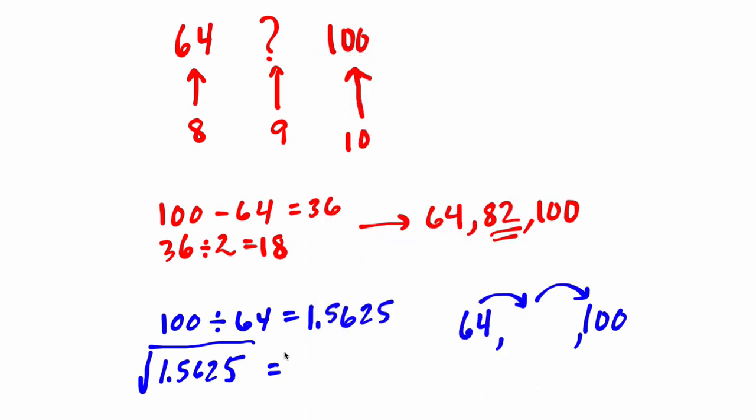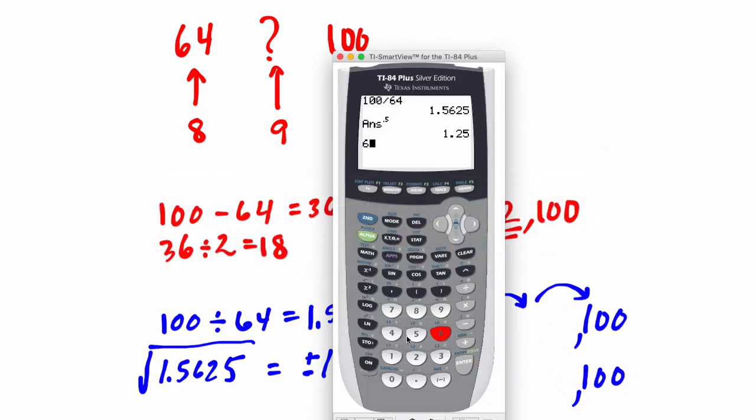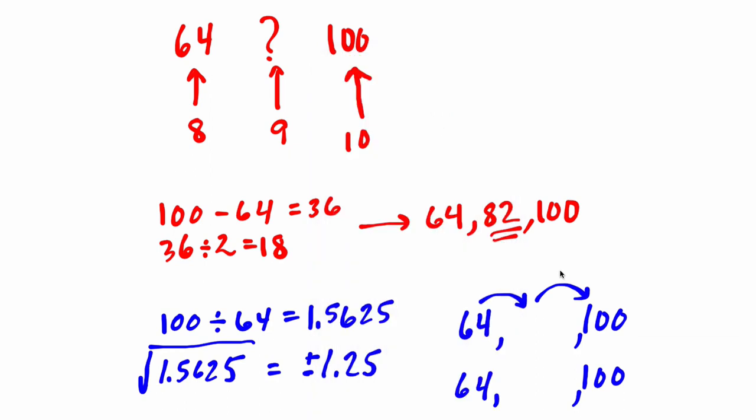But remember, when you're taking the square root, you want to include both the positive or negative root. So let's do the positive case first, and the negative case second to include both possibilities. In the positive case, we take 64 and multiply it by 1.25, and that gets us 80.